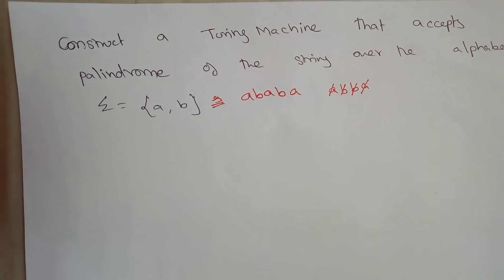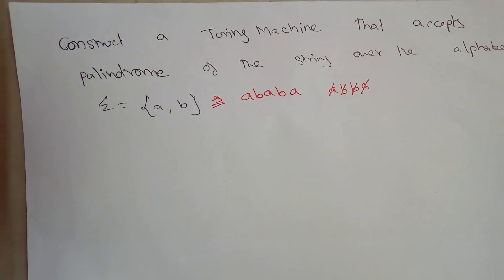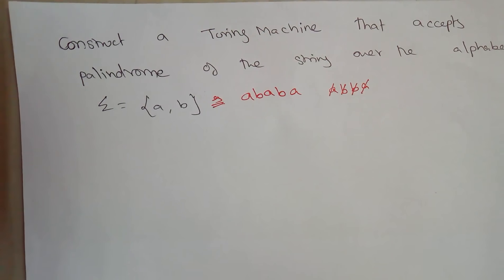Hi everyone. In this session we are going to construct a Turing machine that accepts a palindrome string as input. The input is made up of the alphabets A and B, so all inputs are combinations of A and B, and whenever the string given to the system is of palindrome type, the Turing machine has to go to an accepting state.